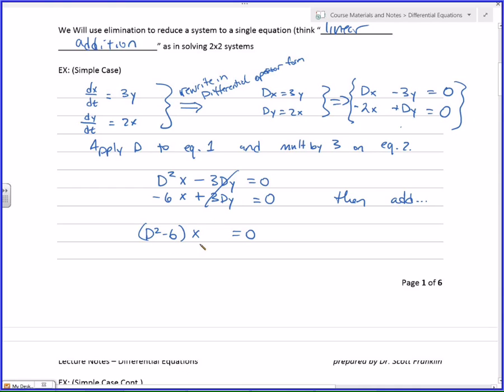d squared x minus 6 is d squared minus 6x equals 0. Now what's d squared minus 6? Applied to x. Notice that's x double prime minus 6x equals 0. It's a differential equation. Second order. Linear. With constant coefficients.